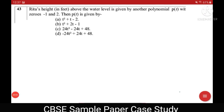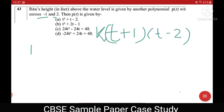Question number 43 says that Rita's height is given by another polynomial pt whose zeros are minus 1 and 2. So let the polynomial is t plus 1 because minus 1 is a zero and t minus 2 because plus 2 is a zero along with a factor that is k. So this gives me k into t square plus 1t minus 2t is minus 1t plus 1 into minus 2 is minus 2. So this is my answer.